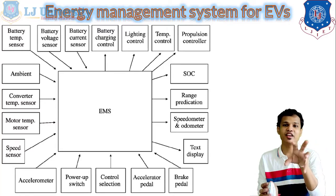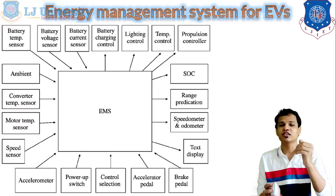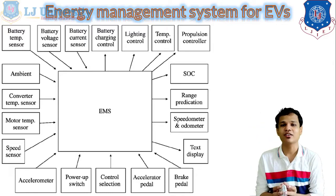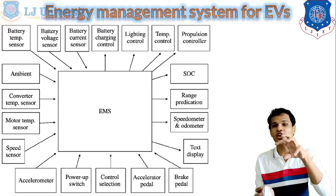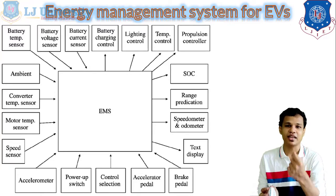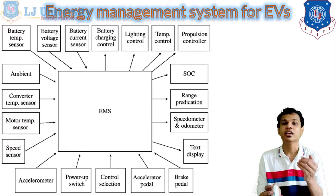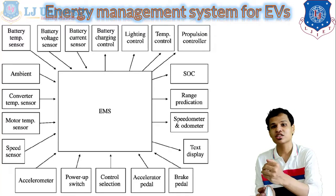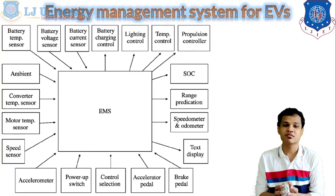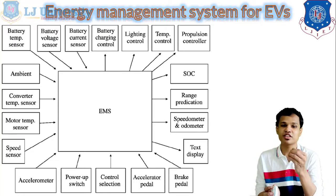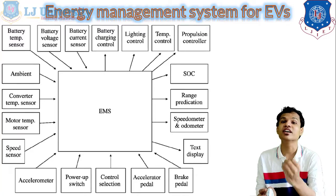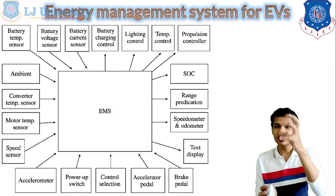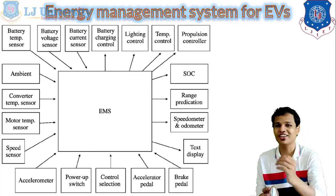There are a number of sensors. First is the battery temperature sensor, battery voltage sensor, and battery current sensor — all three measure battery condition. From temperature, voltage, and current we know how much the battery is charging or discharging and how much energy is stored. Next is the ambient temperature measurement, converter temperature measurement for the DC-to-DC power converter, and motor temperature sensor — all temperatures are monitored to maintain safety and prevent overheating.